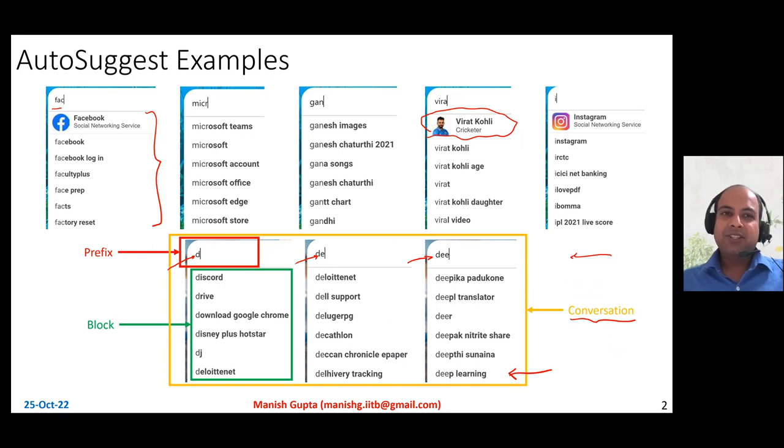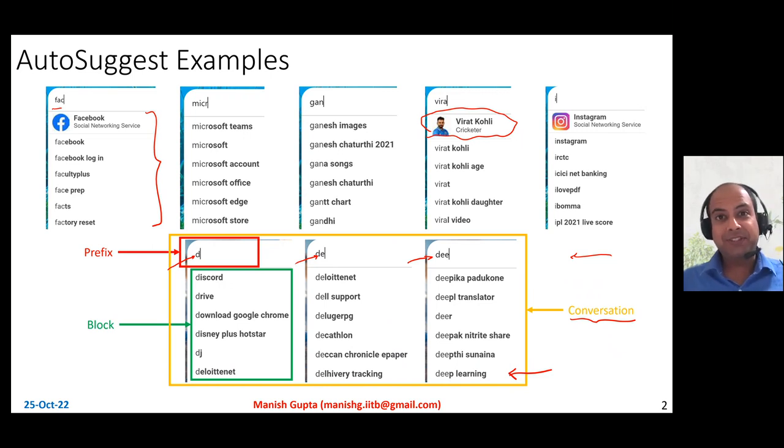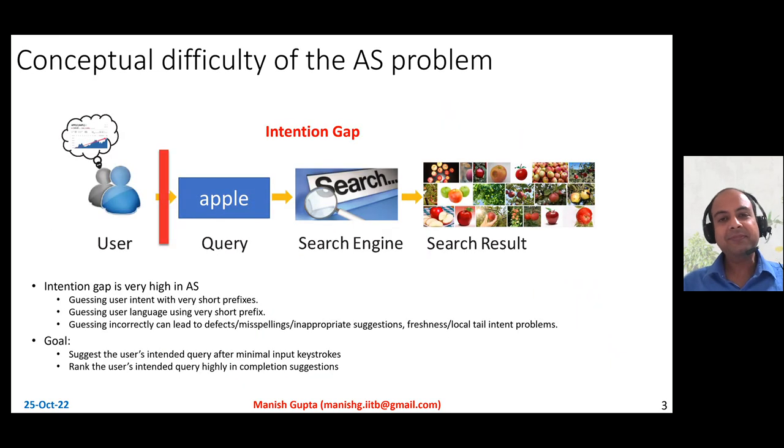In some ways, autosuggest is basically the entry point to search, and therefore it's a very, very important system.